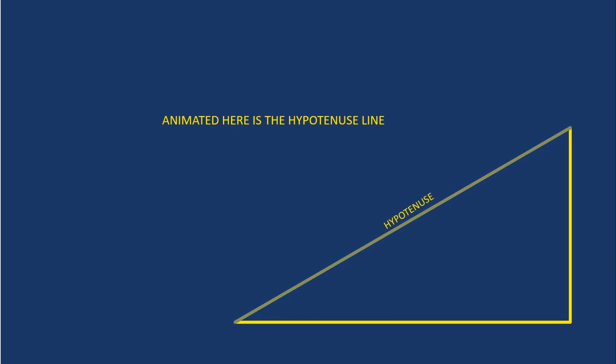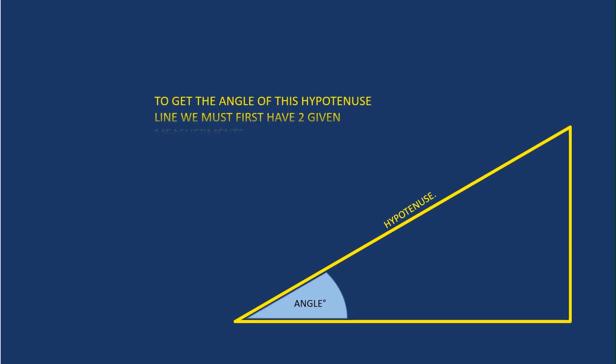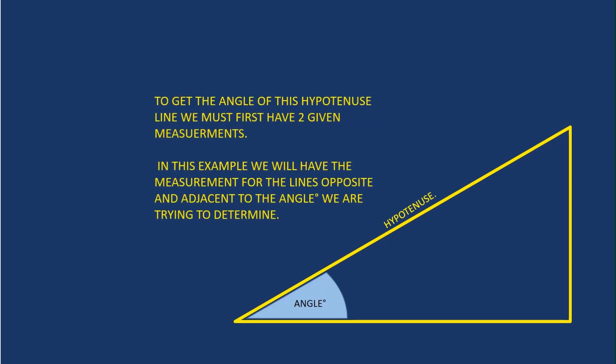The hypotenuse line is flashing here for those who may not be aware where it is. To get the angle of this hypotenuse we must have two given measurements: the opposite side to the angle we're dealing with and the adjacent side to the angle.